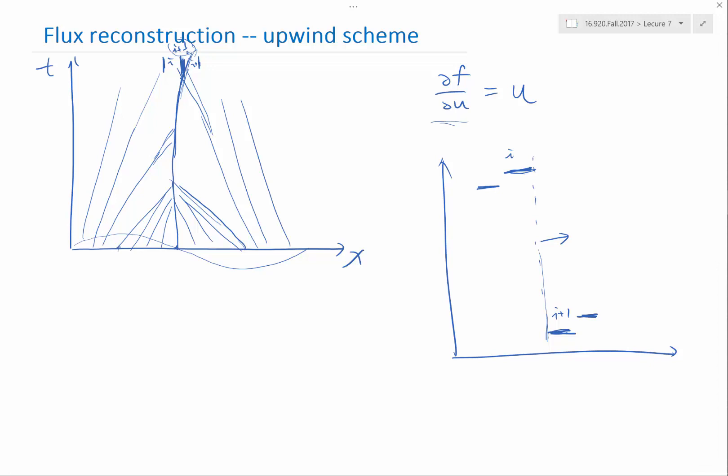So we discussed the central scheme which is a scheme that is second order but produces spurious oscillations near the shockwave, and we here are discussing a first order accurate scheme but hopefully don't have the spurious oscillations. And the rest of this lecture and the next lecture we will also be discussing how do we simultaneously satisfy a second order scheme and also no spurious oscillations.